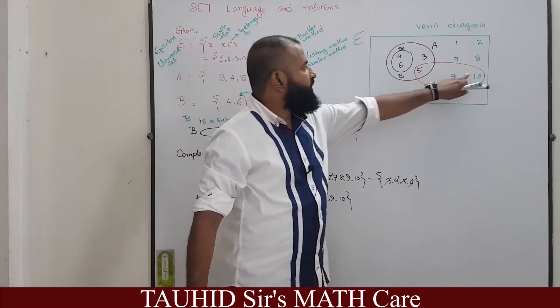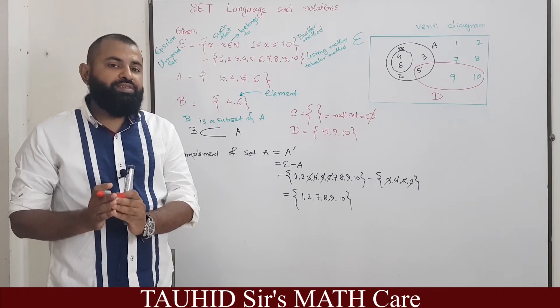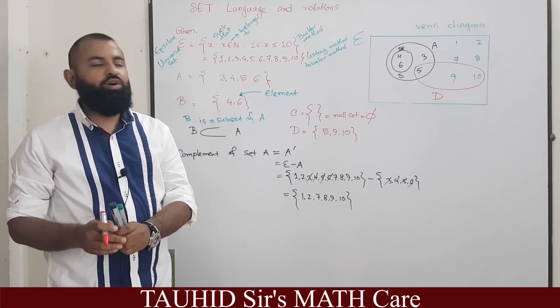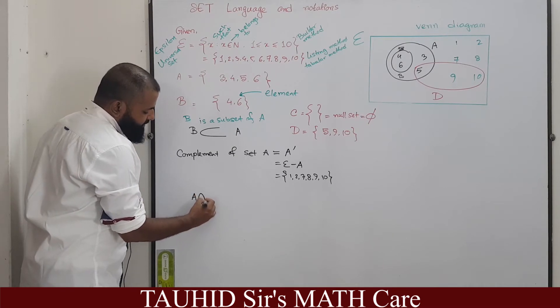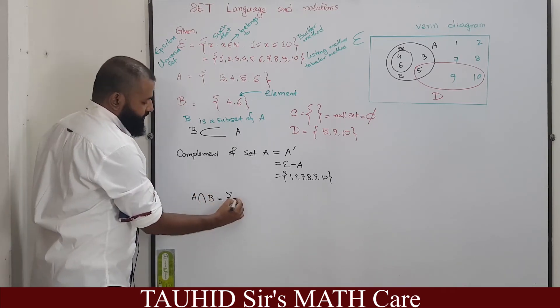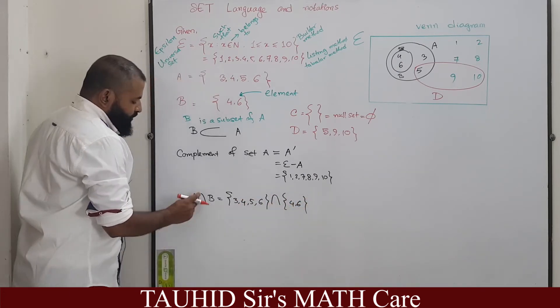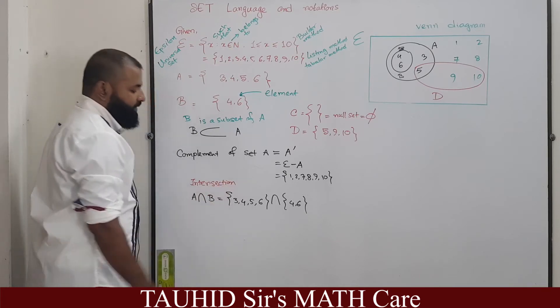Now we will learn about union of sets and intersection of sets. Now if you are asked that what is A intersection B? The pronounce of this is intersection.